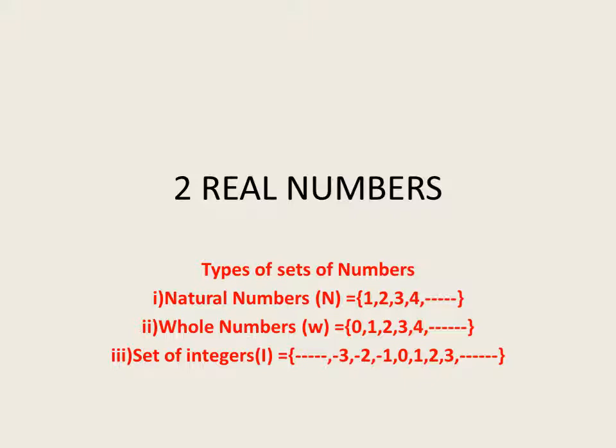The next set is the set of integers, denoted by the letter I. In the case of integers, positive and negative integers go up to infinity. The set is written as: …negative 3, negative 2, negative 1, 0, 1, 2, 3… These three sets you studied last year.